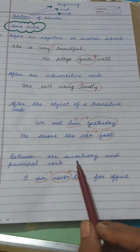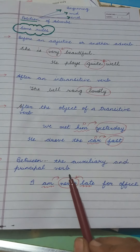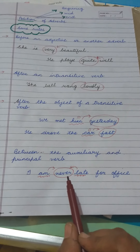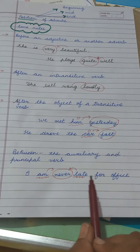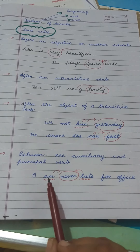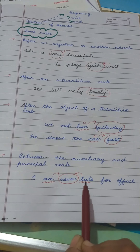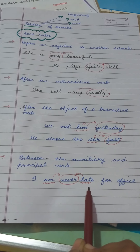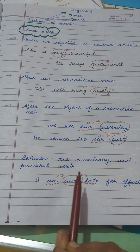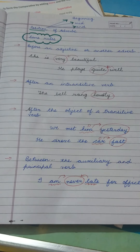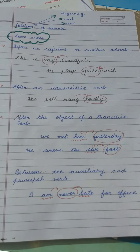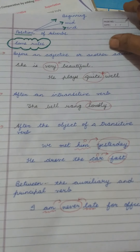The fourth rule: adverbs are placed between the auxiliary (helping) verb and the principal (main) verb. For example: 'I am never late for office' — 'am' is the helping verb, 'never' is the adverb, and 'late' relates to the main idea. So if a sentence has a helping verb and a main verb, the adverb can be placed in between. These basic rules help you put adverbs in the correct position in a sentence.